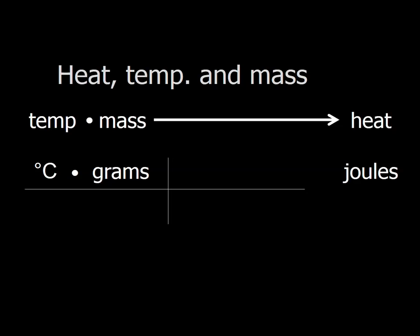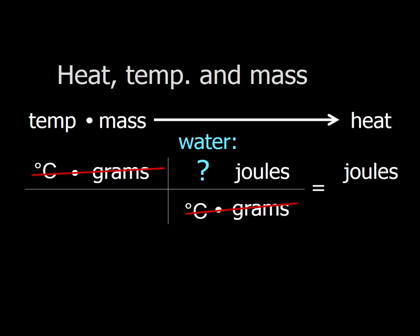So we have a conversion factor that allows us to do that. This conversion factor has degrees Celsius and grams on the bottom, and it has joules on the top. Now there's a number that goes here. The number that goes here is a number that's unique to a particular substance. In the case of water, this number, which is experimentally determined, is 4.184 joules.